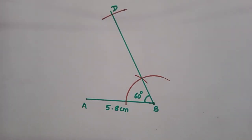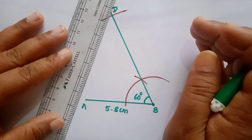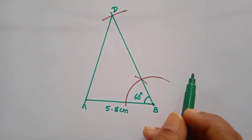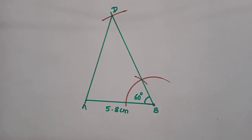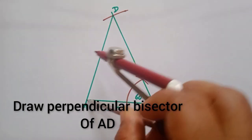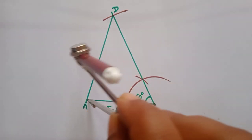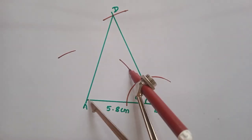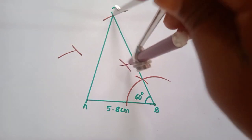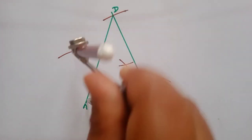Now join AD. Next, you have to draw the perpendicular bisector of AD. Take more than half the measure of AD and draw an arc above and below AD. Repeat the same step with D as center. If the arcs are not intersecting, extend the previous arcs.